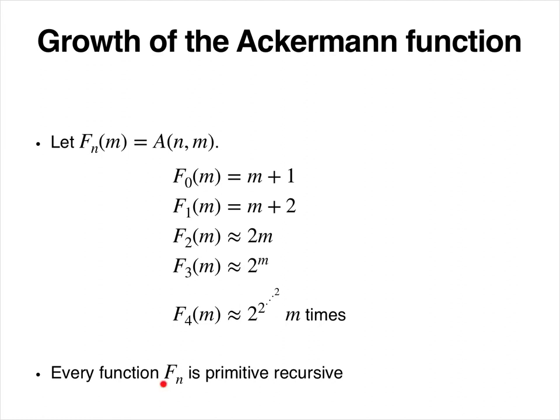You can also show that every function f_n is actually primitive recursive, so if we fix n, we get a primitive recursive unary function.